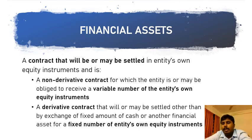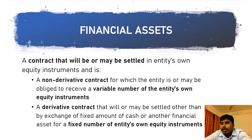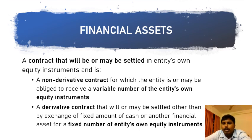For A Limited, this same contract is a financial liability, because the exchange is detrimental or unfavorable to them. The fifth component — a contract that will or may be settled in the entity's own equity instruments — is redundant in India. As per the Companies Act, we cannot hold our own shares (it would amount to buyback). Since the concept of treasury stock applicable in foreign countries is not permitted in India, this part of the definition is not applicable for Indian companies.